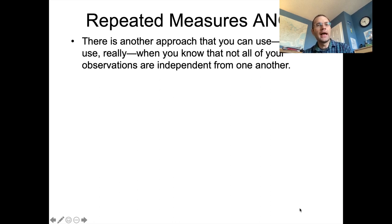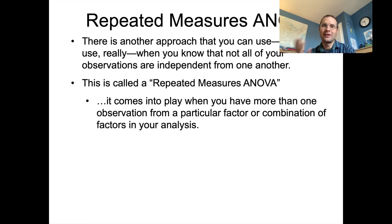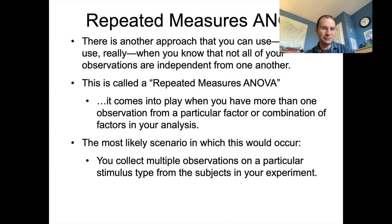Repeated measures ANOVA comes into play when you have more than one observation from a particular factor or combination of factors, so they're not entirely independent. For example, in our VOT data set I had you guys repeat each individual word three times, giving us repeated measures for the VOT of a particular stop in a particular word like 'peel' or 'keel' or 'pale.' Those measures should not be entirely independent because they're repetitions of the same thing over and over again.